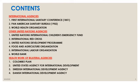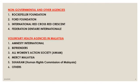The contents are organized under three headings: international agencies, other United Nations agencies, and health work of bilateral agencies. Bilateral means one country helping another — for example, Switzerland helping Malaysia. Non-governmental and other agencies like NGOs, non-governmental organizations, are also covered. Then voluntary health agencies — NGOs are actually included under voluntary agencies.